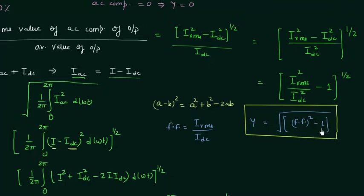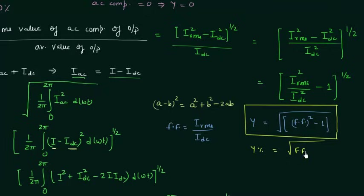I will use this formula to obtain the ripple factor for half wave rectifier. In percentage terms, gamma percent equals the square root of (form factor² − 1), multiplied by 100.